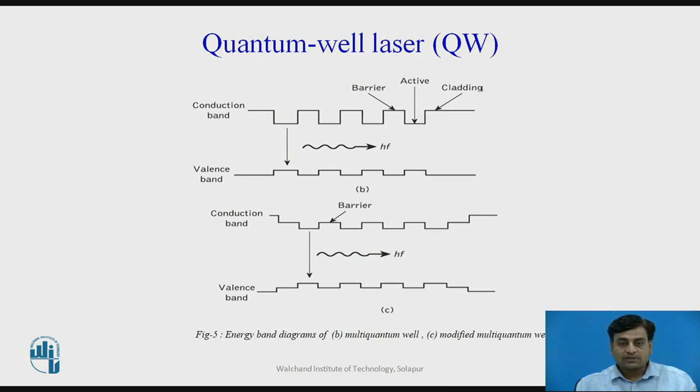It may be observed in figure number 5c that when band gap energy of the barrier layer differs from the cladding layer in a multi quantum well device, it is usually referred as a modified multi quantum well laser. Better confinement of optical mode is obtained in multi quantum layers in comparison with single quantum well lasers, resulting in a lower threshold current for these devices.